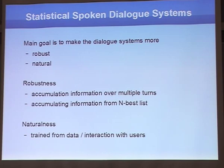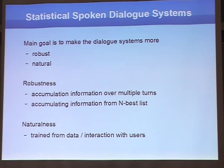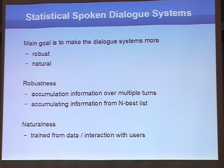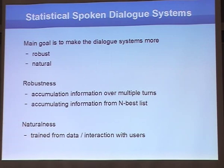Naturalness would ideally come from learning from data — learning how people behave. Let me explain accumulating probabilities from multiple turns. We have an N-best list with two hypotheses: the most likely says the user wants a restaurant, the second says hotel. In the second turn, the top hypothesis is bar and second is hotel. If we just use each turn independently we might conclude the user suddenly wants a bar, which is wrong.